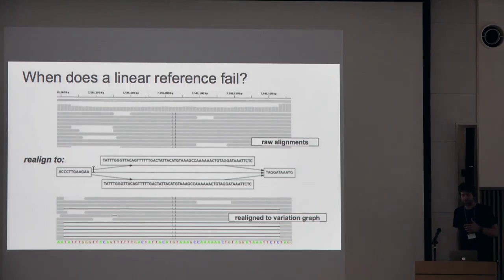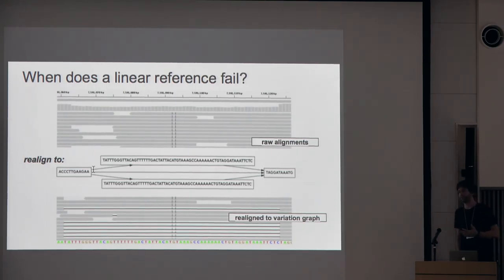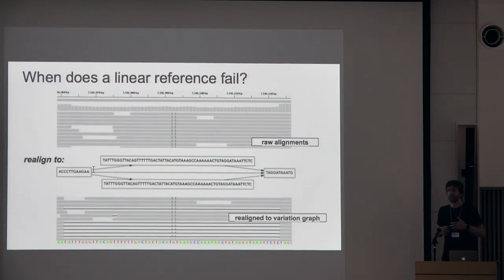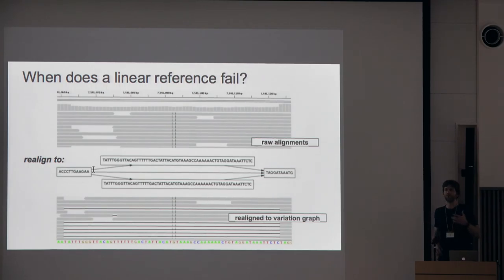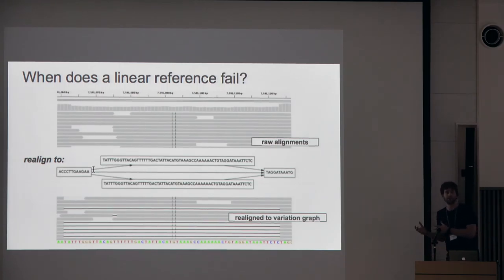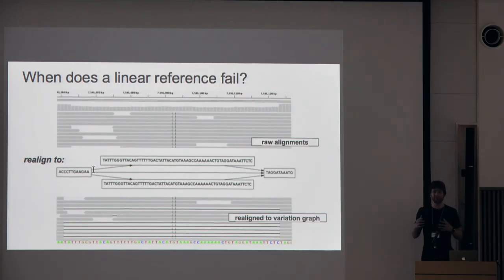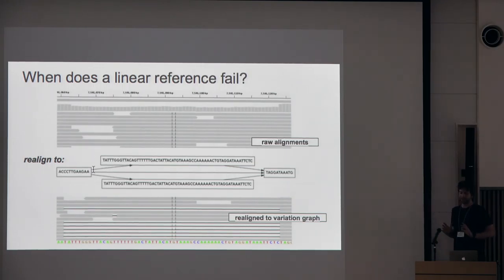The question I can start with is: when does a linear reference system fail? We use these systems all the time. We have one human genome that we map all things against and we talk about gene models on the basis of that system. We do this for every model organism, and whenever we see a new organism we try to make a linear reference out of some sequencing data, even if that's not necessarily appropriate — like it might be some system that doesn't really have one genome.